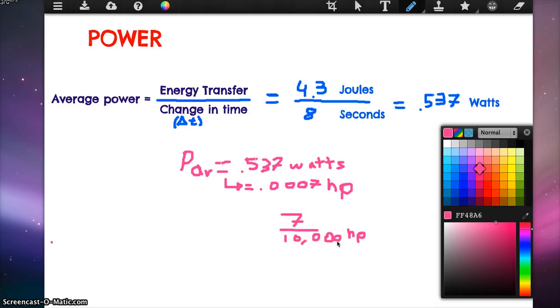If I compare this to a Lamborghini, Lamborghini is about 700 horsepower, so our mousetrap car is not even 1% of the horsepower of a Lamborghini, of how much little power our mousetrap has.